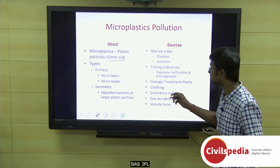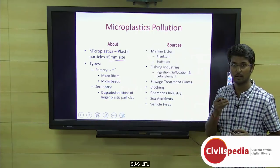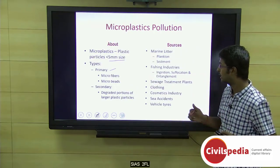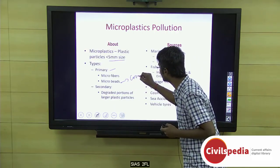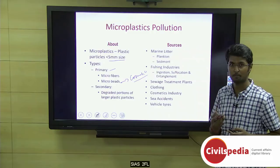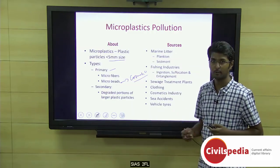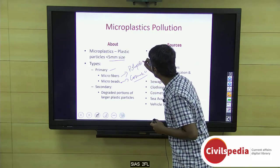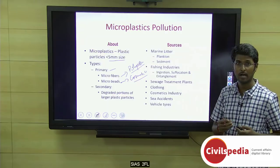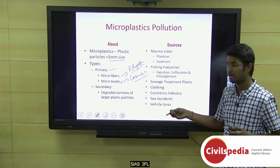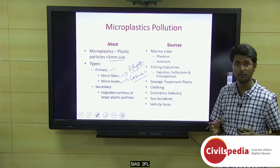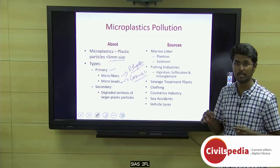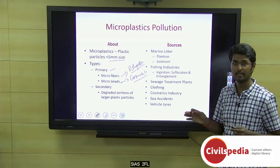Primary microplastics come from microfibers or microbeads. Microbeads are largely used in the cosmetic industry, in soap gels or shampoo gels. Microfibers are part of polyester and nylon cloth materials. When these cloth materials undergo washing, microfibers are released during every wash — around 1,500 to 2,000 microfibers per wash — which enter the aquatic pathway.